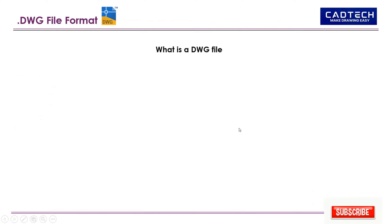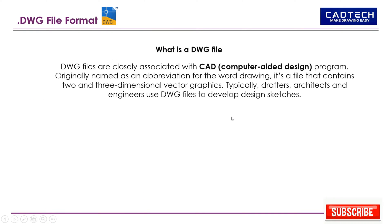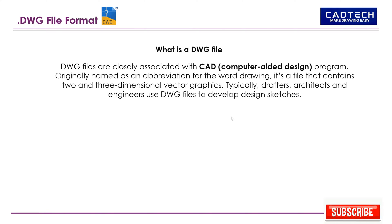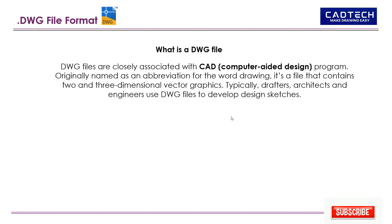What is a DWG file? DWG files are closely associated with CAD, Computer Aided Design, programs. Originally named as an abbreviation for the word 'drawing', it's a file that contains two- and three-dimensional vector graphics. Typically, drafters, architects, and engineers use DWG files to develop design sketches.